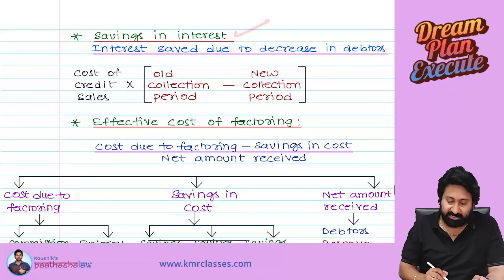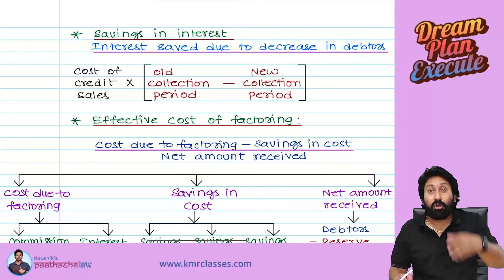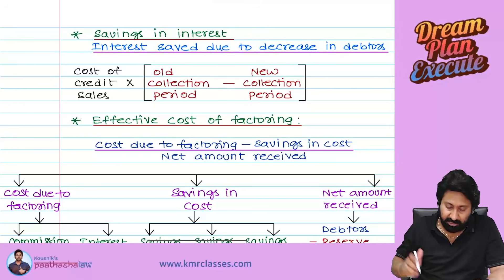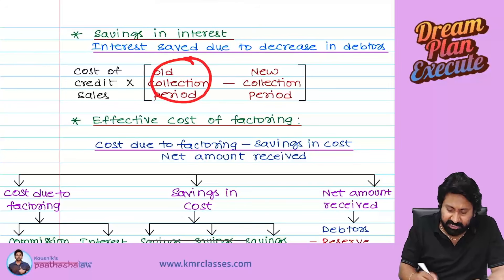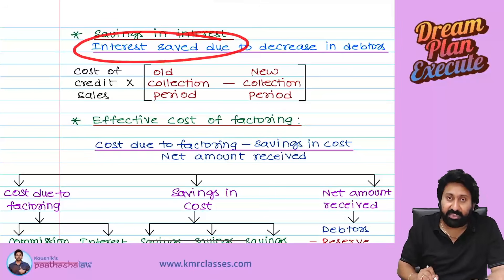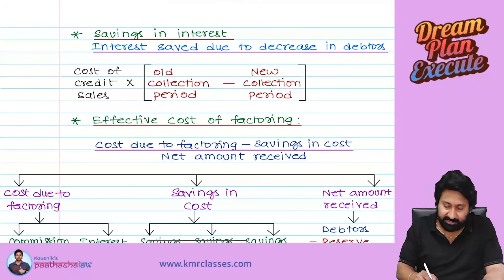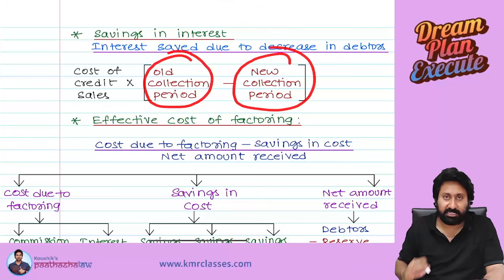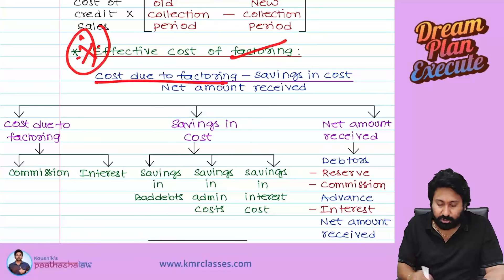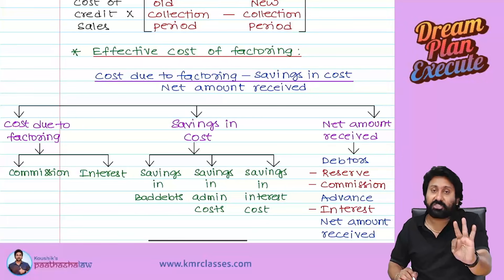Savings in interest arise because your debtors are going off the balance sheet. There is an old collection period and a new collection period; interest saved equals credit sales multiplied by the decrease in collection period. The effective cost of factoring formula: costs due to factoring include commission and interest on advance.